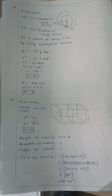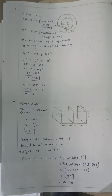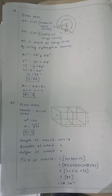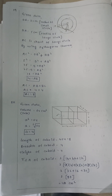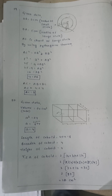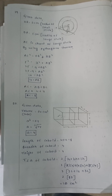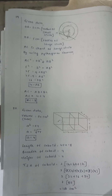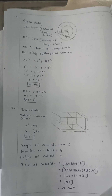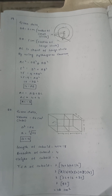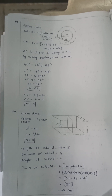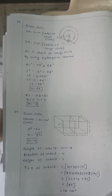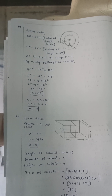Twentieth question: two cubes are joined together. Find the total surface area of the resulting cuboid. The total surface area of the cuboid is 2(lb + bh + hl), which equals 160 cm².